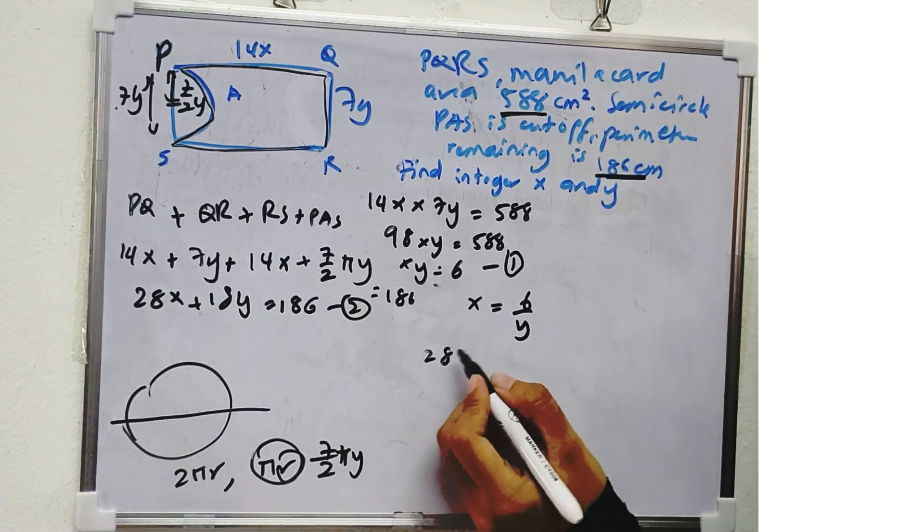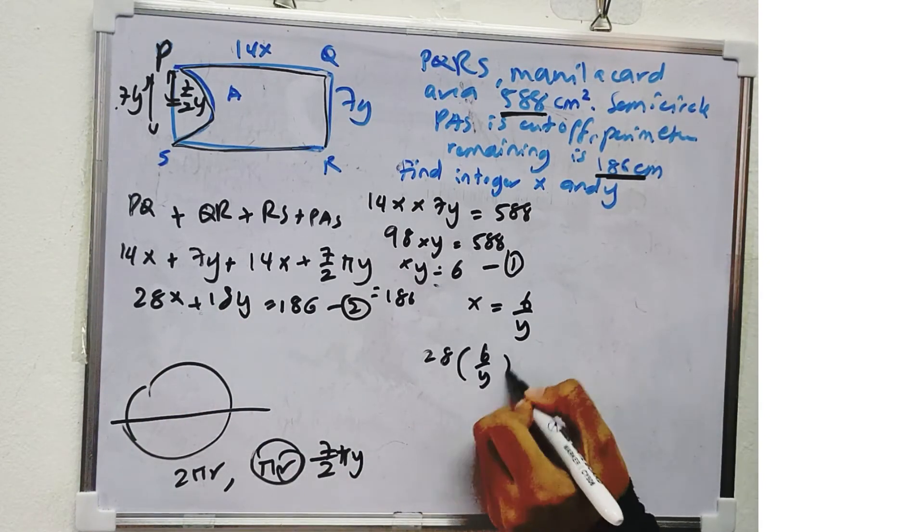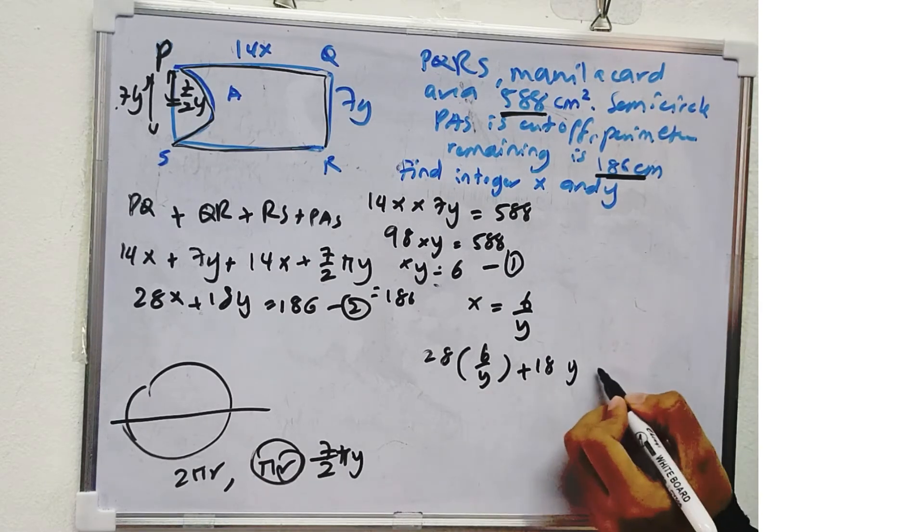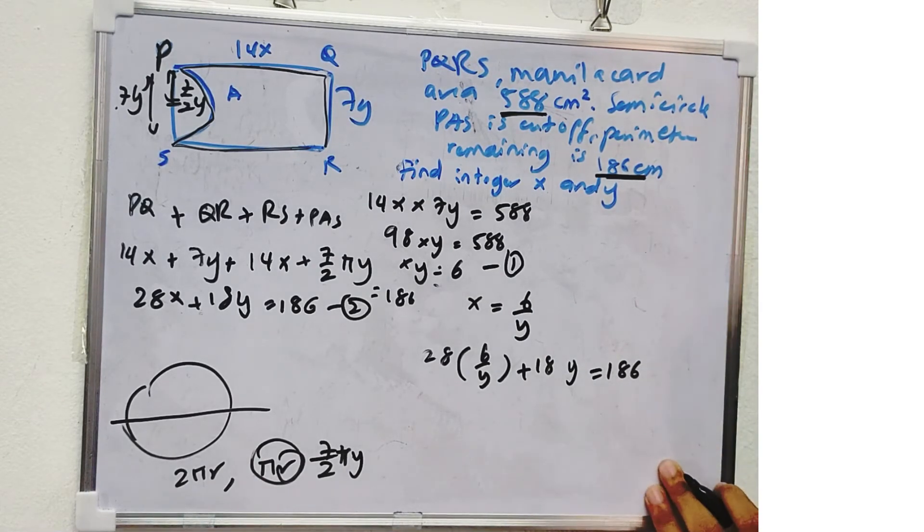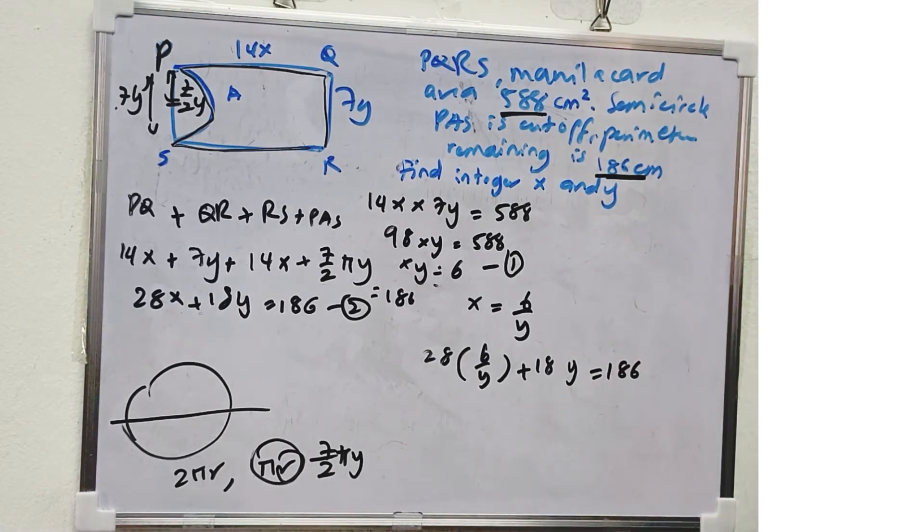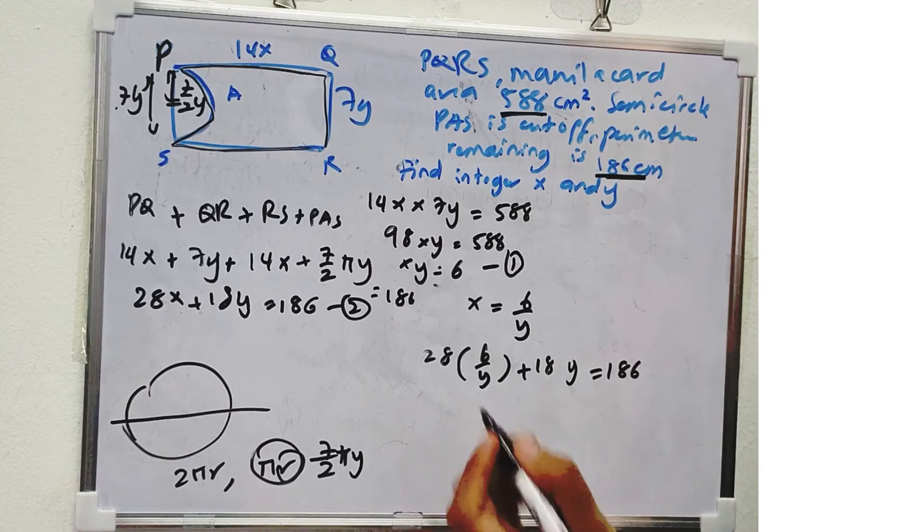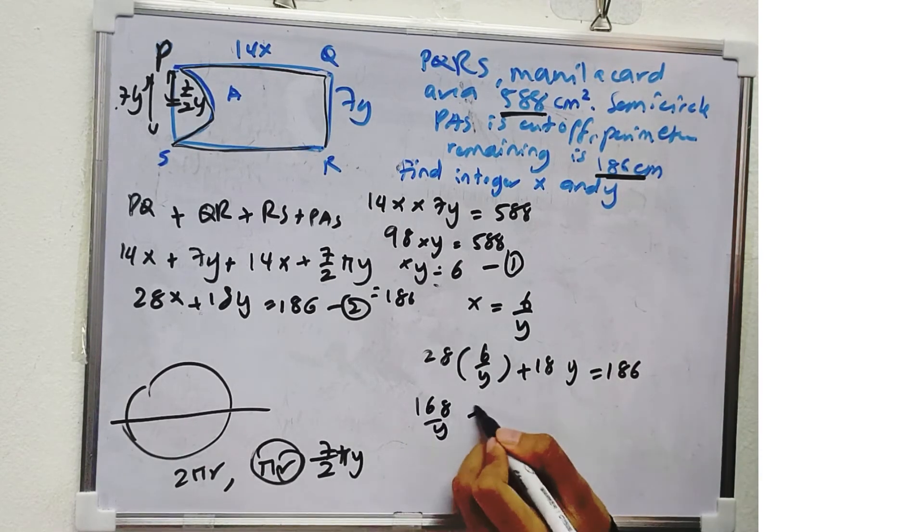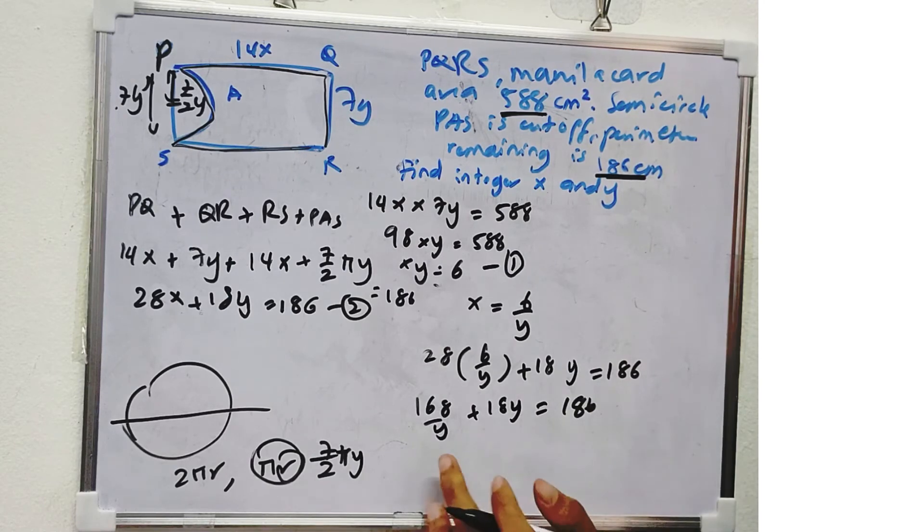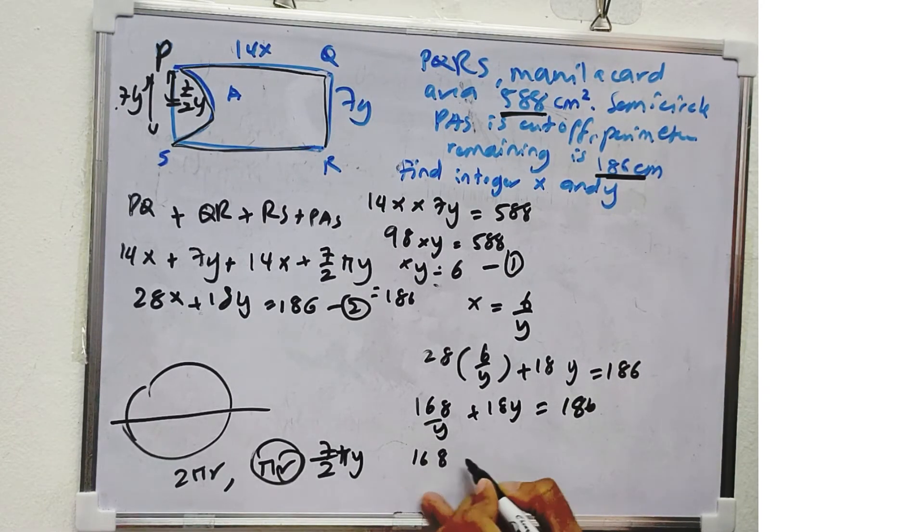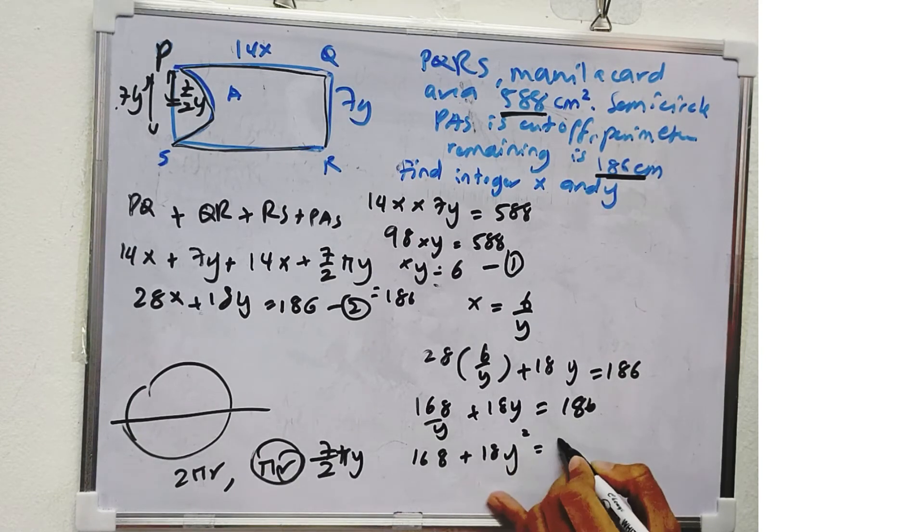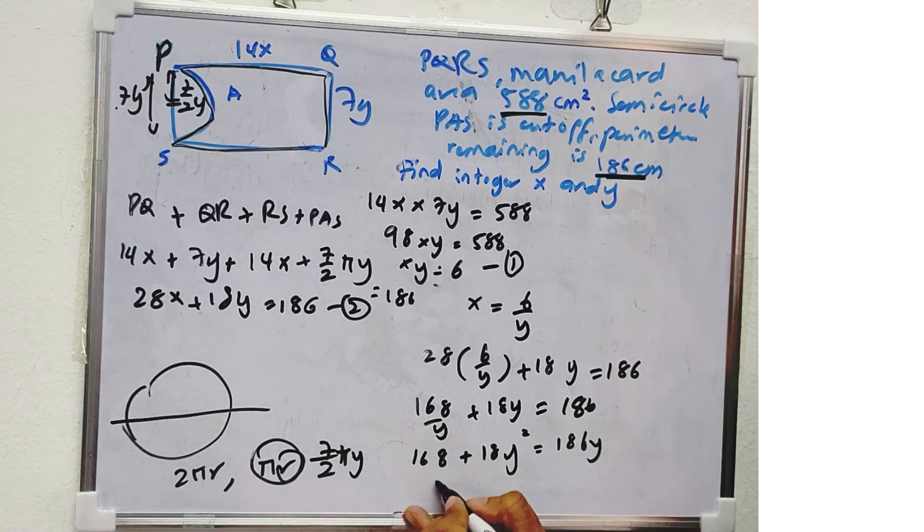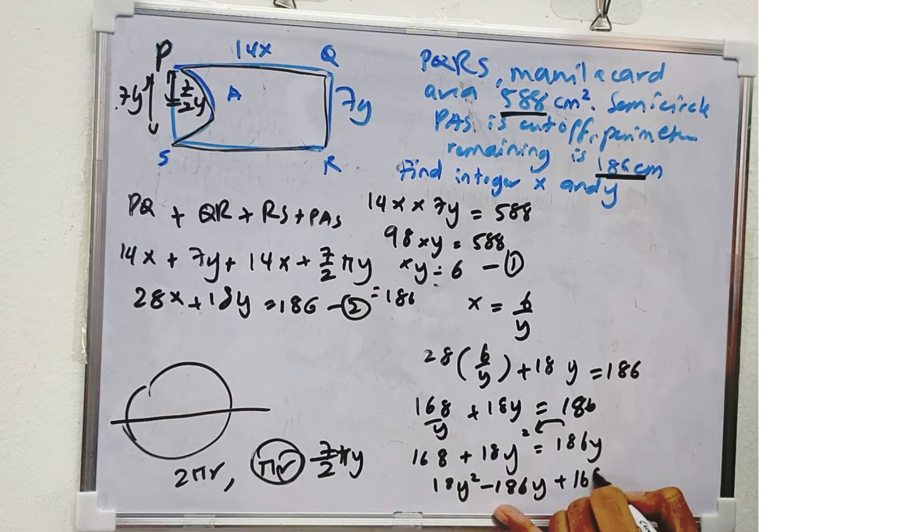So 28, 6 over Y plus 18Y is equal to 186. So 28 times 6 is 168. So 168 over Y plus 18Y is equal to 186. So 18Y square, we bring to the left minus 186Y plus 168 is equal to 0.